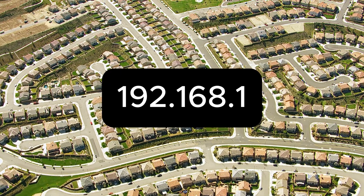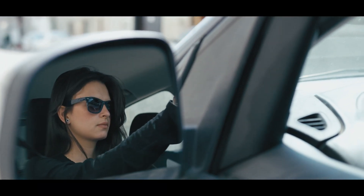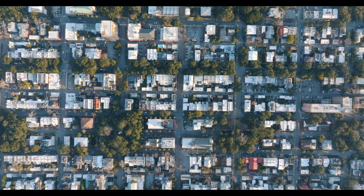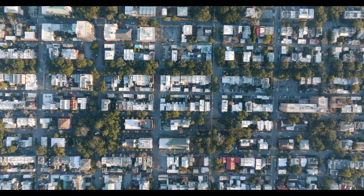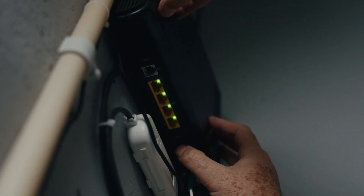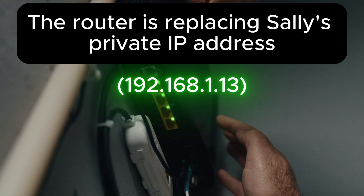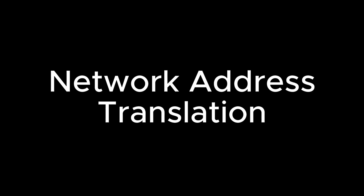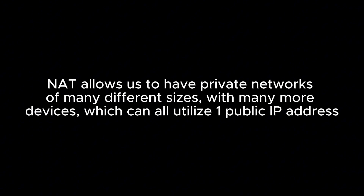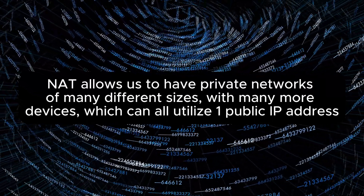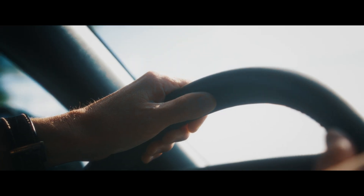For now, let's stick with the neighborhood's address of 192.168.1. When Sally leaves the neighborhood to go shopping, instead of saying she's coming from her house at 192.168.1.13, she says she came from her neighborhood's public IP address — let's say 100.100.100.100 as an example. What's happening here is that the router is replacing Sally's private IP address with its own public IP address. This process is known as Network Address Translation, or NAT. NAT allows us to have private networks of many different sizes with many more devices, all utilizing one public IP address.